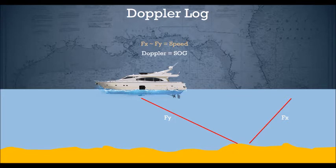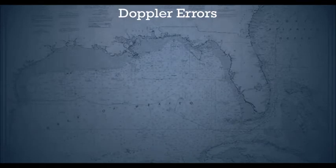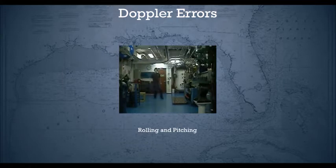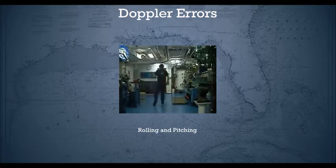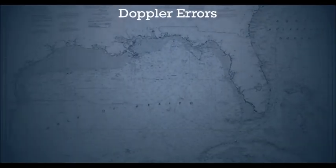Doppler gives you speed over ground in lower depths. However, in deeper waters when it can't find the ground, it gives you speed through the water, and in that case you can use the speed for collision avoidance. The console will indicate what speed it is showing — speed through the water or speed over ground. Doppler has errors — it is prone to rolling and pitching, which gives erroneous speed readings. This can be avoided by using what is called a Janus configuration.